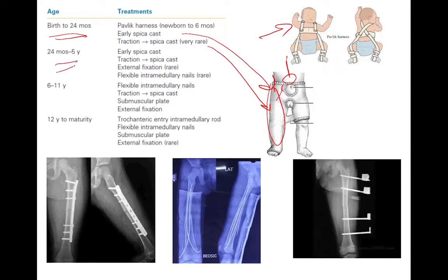From 24 months to 5 years, spica casting can be done — either immediate or late spica casting. External fixators may also be applied and flexible intramedullary nails may be used in certain conditions.